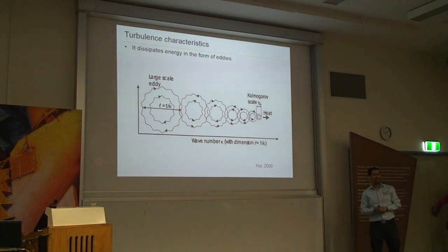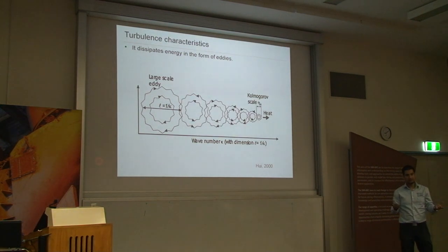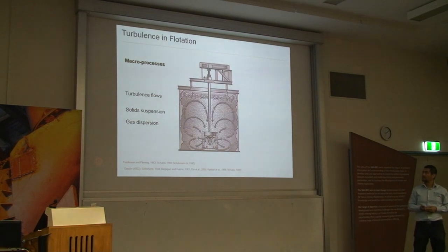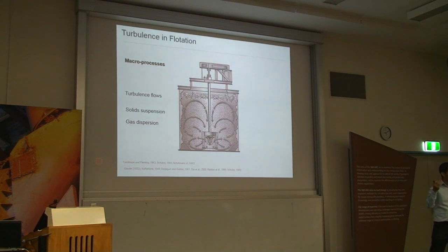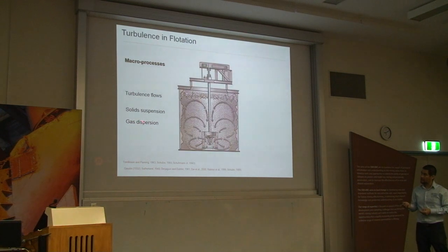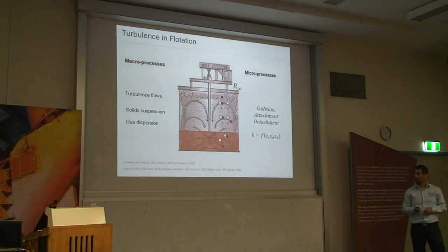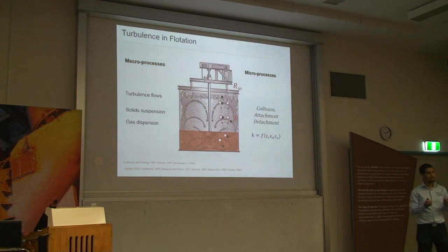In flotation, the source of turbulence is essentially the impeller. Turbulence in flotation has two main roles. The first is to generate macro-processes: the turbulent flows from the impeller dissipate throughout the entire cell, generating solid suspension to expose particles to air, and disintegrating injected gas into tiny bubbles all over the cell. This generates a high-turbulent zone around the impeller and a low-turbulent zone above it — and it is in this high-turbulent zone that most collisions and attachments are believed to occur.